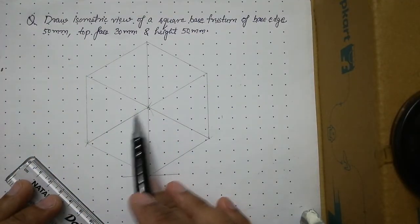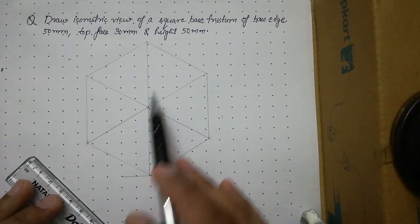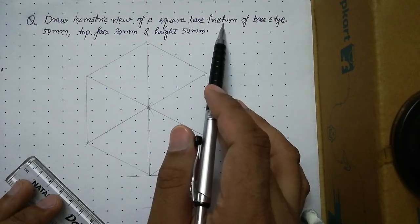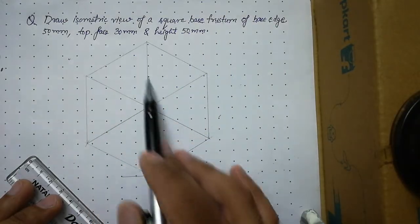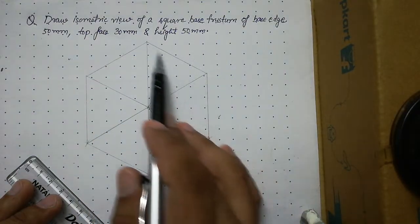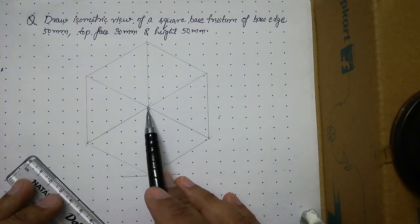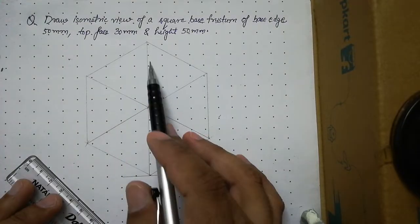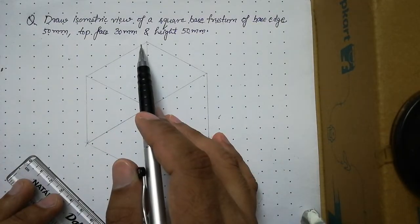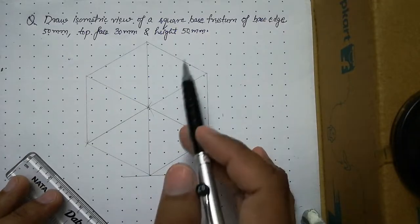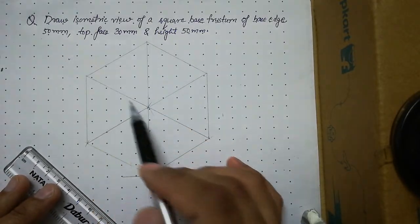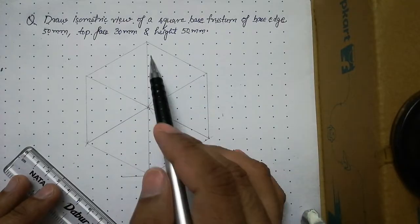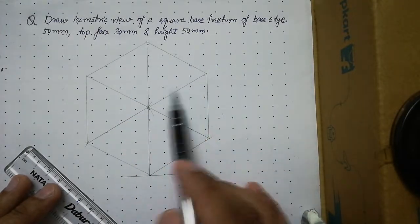The base edge of the box is 50 mm, so we are already ready with the base of the square base frustum. For the top face, however, we need 30 mm instead of 50 mm. Inside the 50×50 top face of the box, we must create a 30×30 square — just as we did in the previous cone frustum question. First, find the midpoints of all four sides.